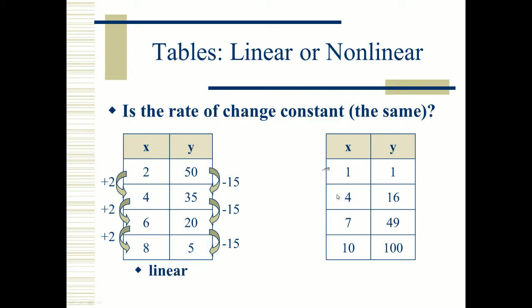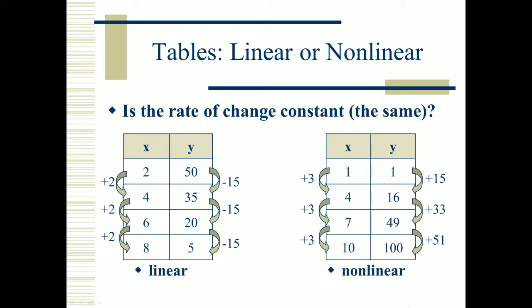Likewise, look at how X is changing here — again by the same amount, adding 3. However, if we look at the change in Y: 1 goes to 16 by adding 15, 16 goes to 49 by adding 33, 49 goes to 100 by adding 51. We call this nonlinear because the rate of change is not the same. You might also hear this described as linear having a constant slope.